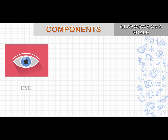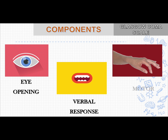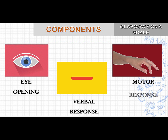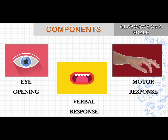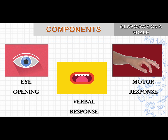There are totally three components. The first one is eye opening, the second one is verbal response, and the third one is motor response. So these are the three main components which are assessed in Glasgow Coma Scale.